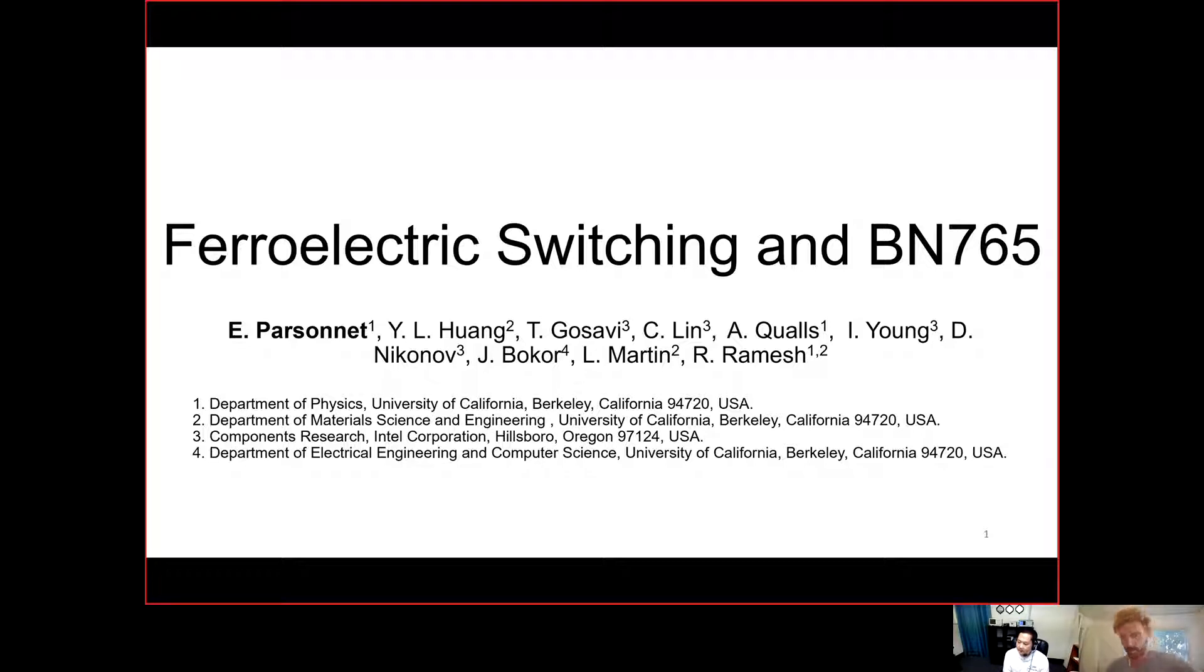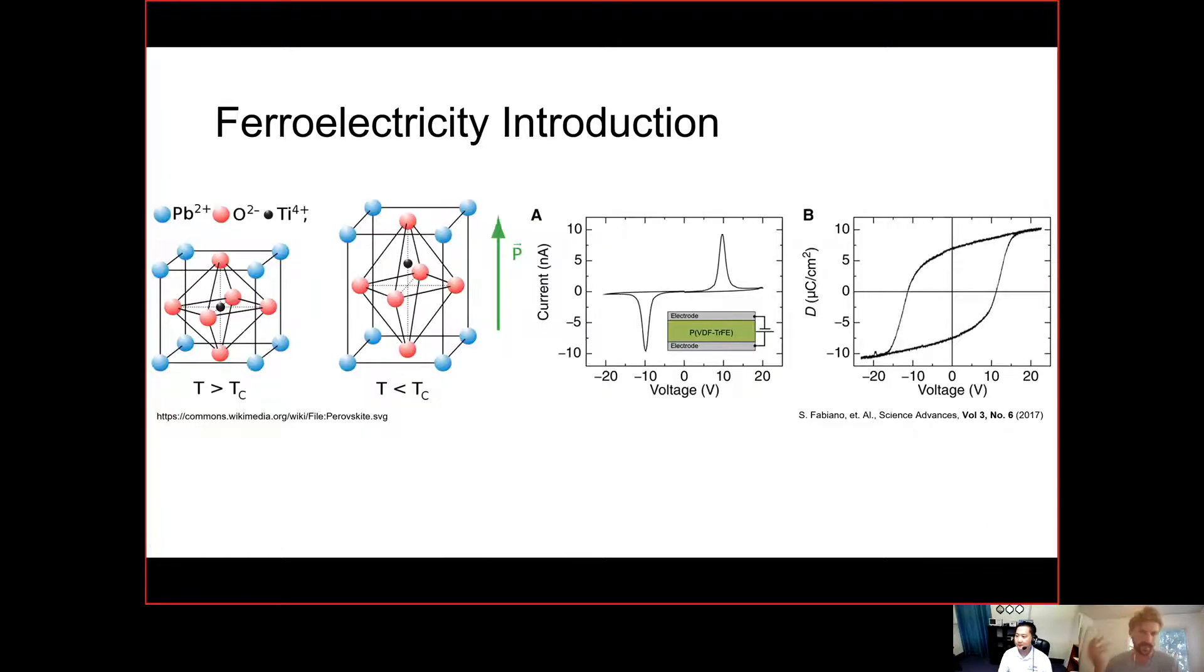This has been a big collaboration with all those folks. Today I'm going to talk a little bit about how I use the 765 model from Berkeley Nucleonics, specifically pertaining to a paper that we just published as it pertains to ferroelectric switching. I'm going to talk about the physics we're trying to investigate, but I will also highlight why the 765 was so important.